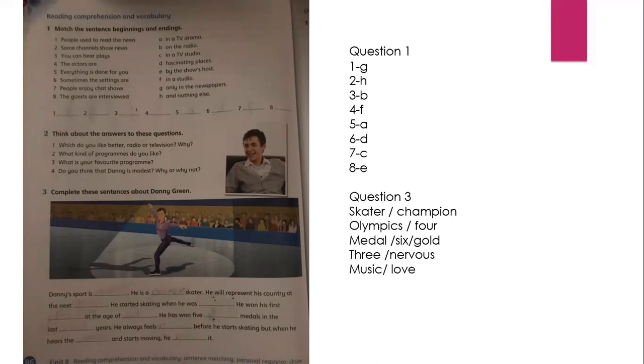Now question number three, we are going to complete the missing word according to the paragraph. Danny's sport is a skater. He is a champion skater. He will represent his country at the next Olympic. He started skating when he was four. He won the first medal at age of six.